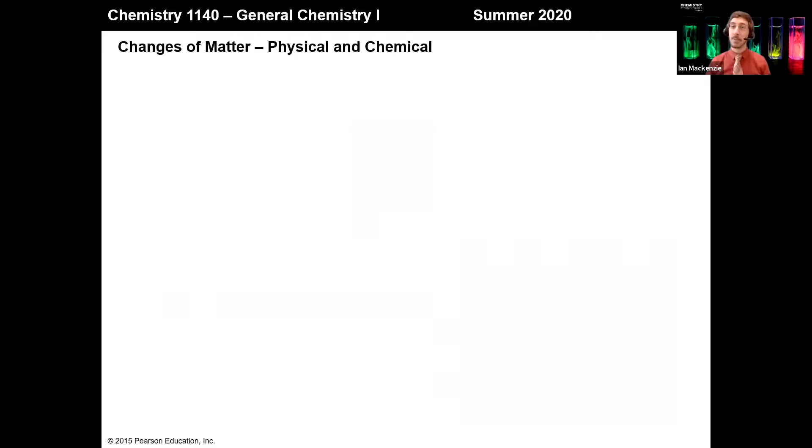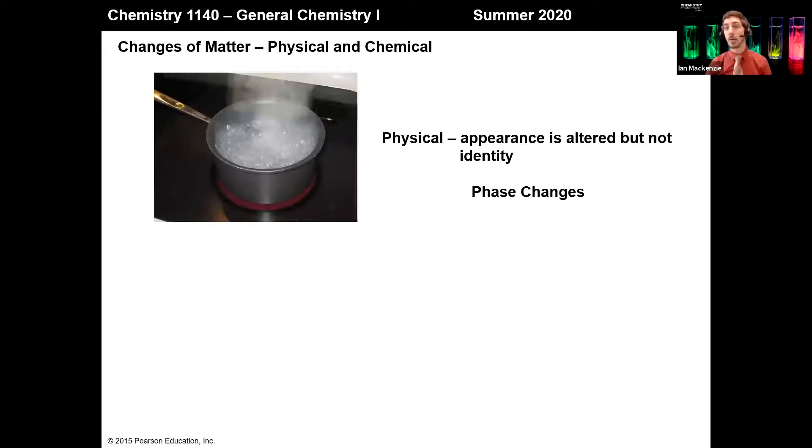In addition to properties, we can also talk about changes of matter, and those we also classify into physical and chemical changes. A physical change is something where the matter changes appearance, but not its fundamental identity. The best and primary example of physical changes are phase changes. If we boil water, for example, we go from liquid water to gaseous water, but the fundamental identity is still water molecules, whether it's in the liquid form or in the gas form. We've simply changed phase. Additionally, if we melt ice, that would be another phase change, but the fundamental molecule has not changed.